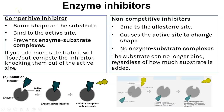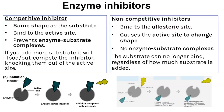Enzyme inhibitors — both competitive and non-competitive — bind to an enzyme; in the exam you must specify which part. A competitive inhibitor binds to the active site because it is the same or very similar in shape to the substrate. If the inhibitor is bound, enzyme-substrate complexes cannot form. However, if more substrate is added, the substrate can eventually displace the competitive inhibitor from the active site.